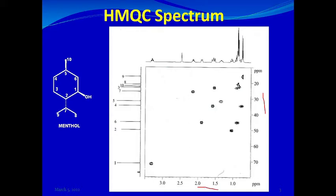Unlike the COSY spectrum, which had a diagonal going right across the spectrum, the HMQC spectrum does not have any diagonal. It just shows contours which we have to connect on both the carbon-13 and the proton NMR scales. For reference, the proton and the carbon-13 spectra have been plotted on top and on the left-hand side of the spectrum.